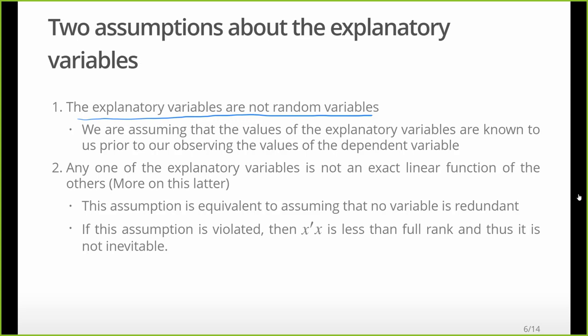Next assumption: any one of the explanatory variables is not an exact linear function of another. If we have perfect multicollinearity - when an economist says multicollinearity, they just mean correlation. If two variables are collinear with one another, that means they're correlated. We just can't have too high a correlation. If we do, then the math breaks down.